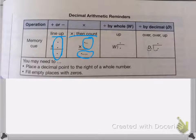With dividing by a whole number, the cue is up. You just move the decimal straight up. And if you're dividing by a decimal number, the cue is over, over, up, which means you move the decimal over here, over here, and then move it up to your answer.